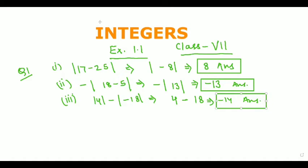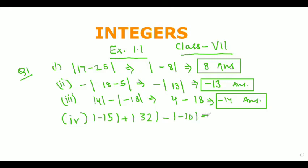Now let's come to the fourth part. The fourth part is: absolute value of minus 15, plus absolute value of 52, minus absolute value of minus 10. In our next step, we write 15 plus 52 minus 10, which equals 57. So our answer is 57. Hope the question is clear.